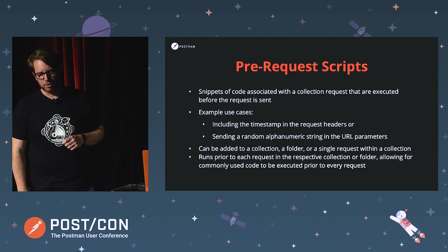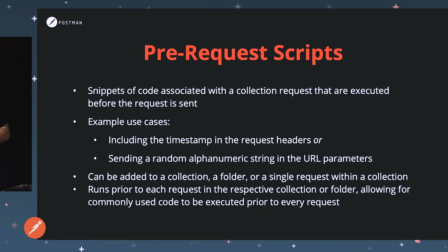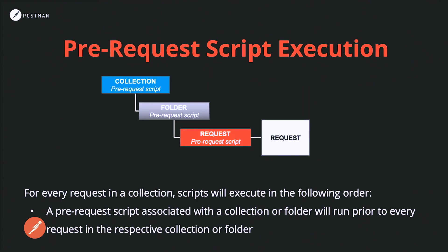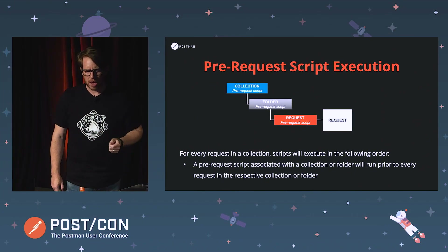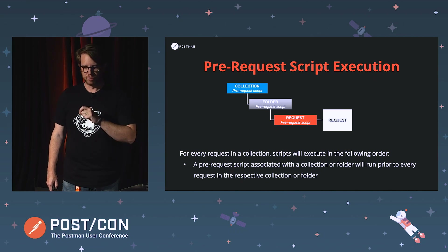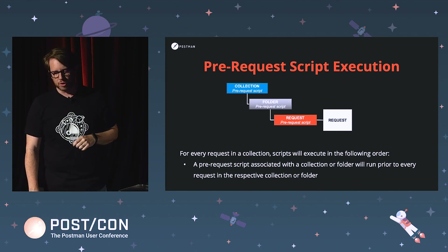Let's talk a little bit about pre-request scripts. These can execute before the requests. They can also be used in various parts of the request itself — maybe in the URL, or in the body. And they can be added not only at the request level, but at the folder and collection levels as well. As you can see in the diagram, it'll execute any collection-level pre-request scripts, followed by folder-level pre-request scripts, and finally the pre-request script for the request itself. All this happens before the request is executed.